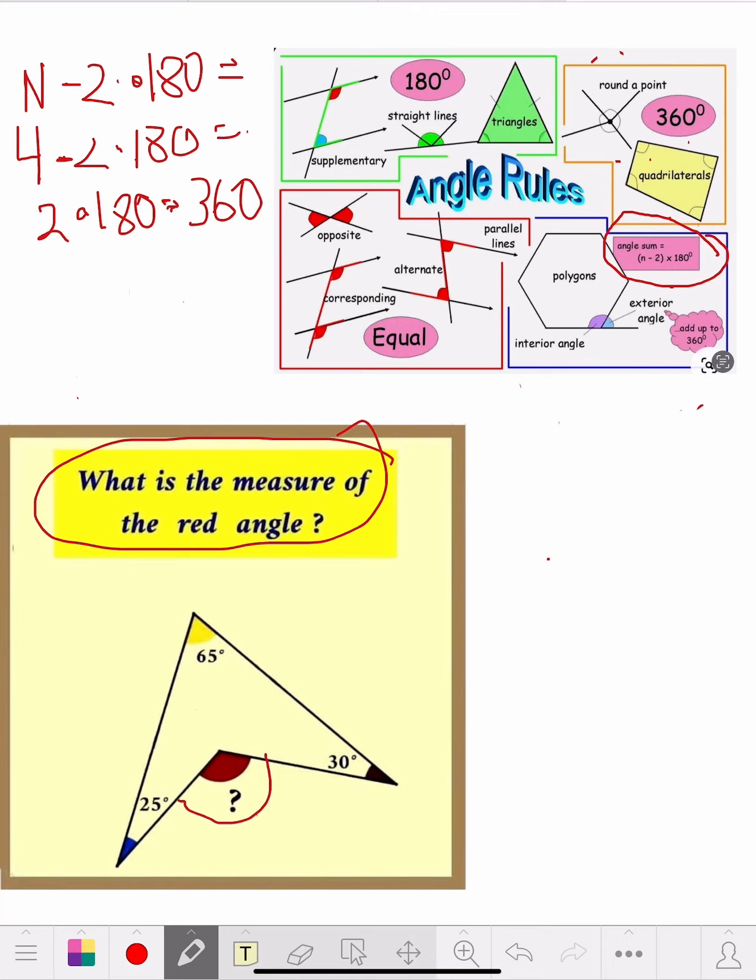So what did they give us so far? They gave us three of these four angles. They gave us three of them. So they gave us a 65, a 30, and a 25. So they gave us all those. So let's just figure. This figure is to a zero, carry a one. We got a seven, ten, twelve, 120.